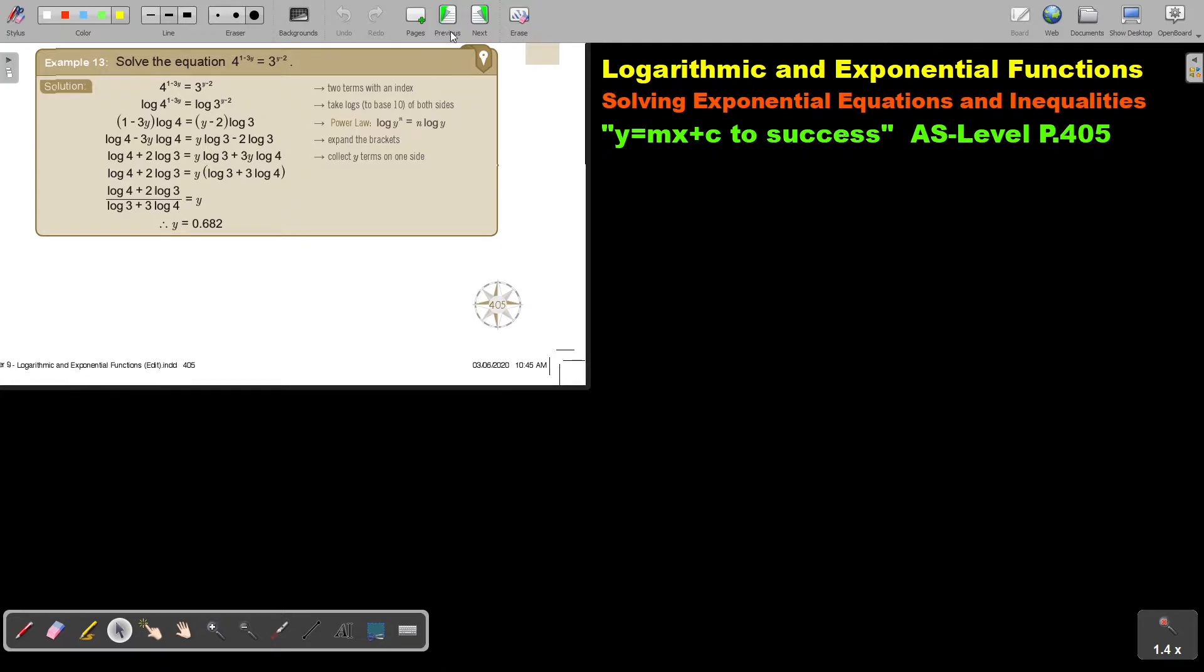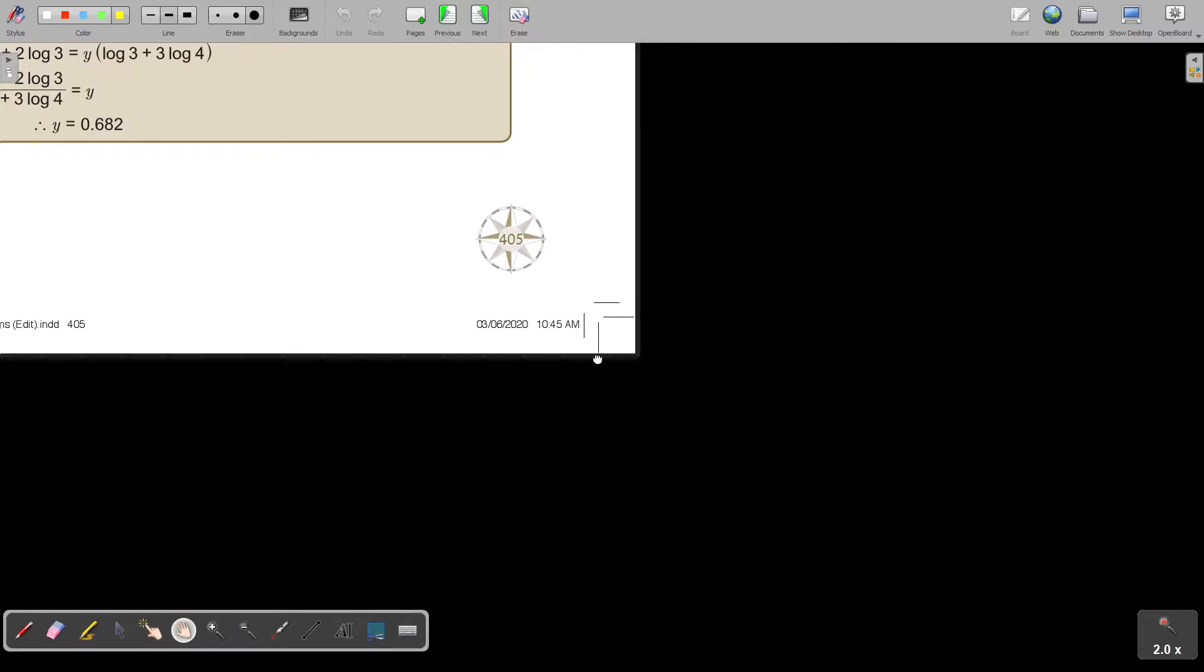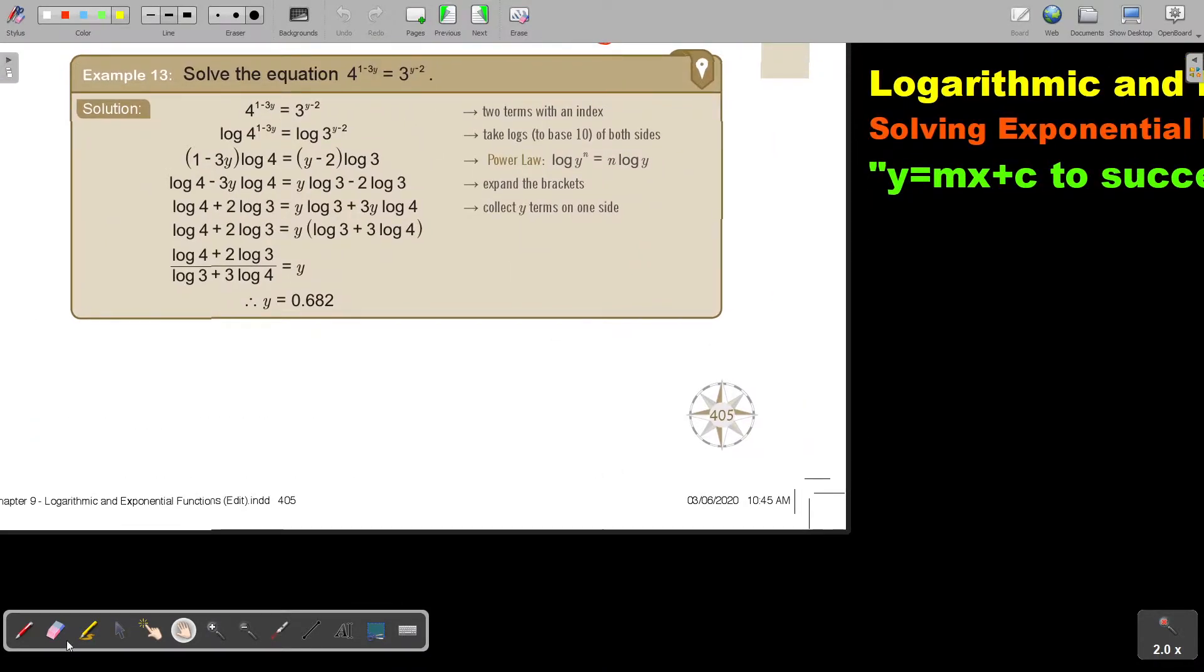Let's look at another example. I'll make it bigger because the exponent is very small. Here it is. Solve the equation. Now you have one term equals one term, and it's an exponential equation because the variables are in the indices or in the exponents. So it's two terms with an index.